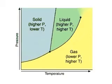Each line between two regions displays the conditions at which those two phases are in equilibrium. This phase diagram is typical for most substances.